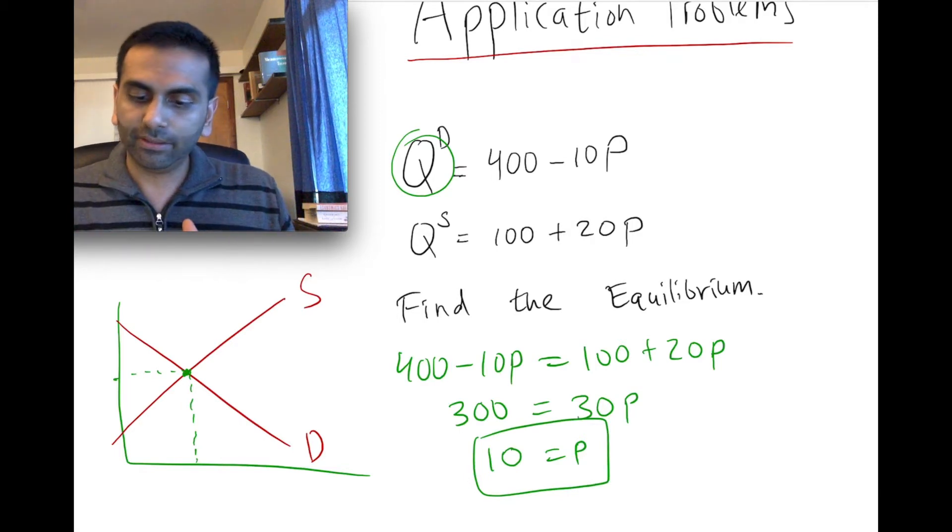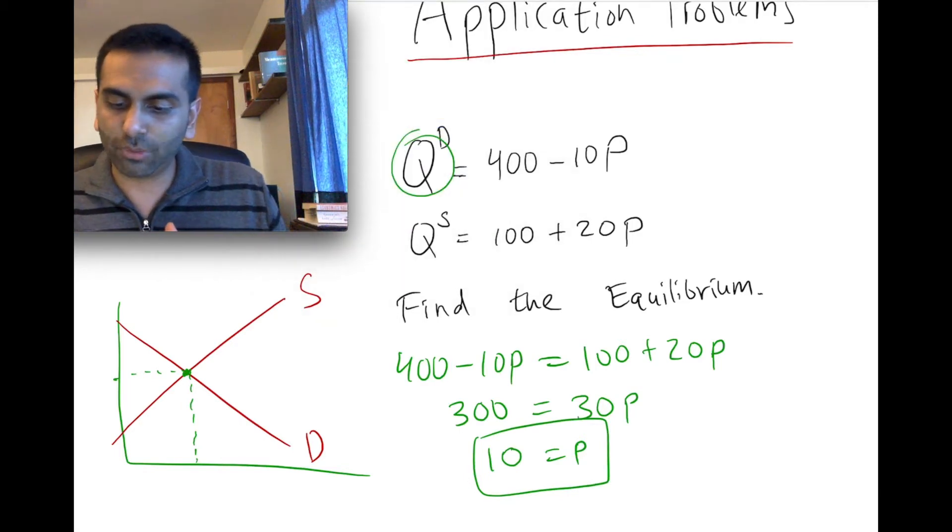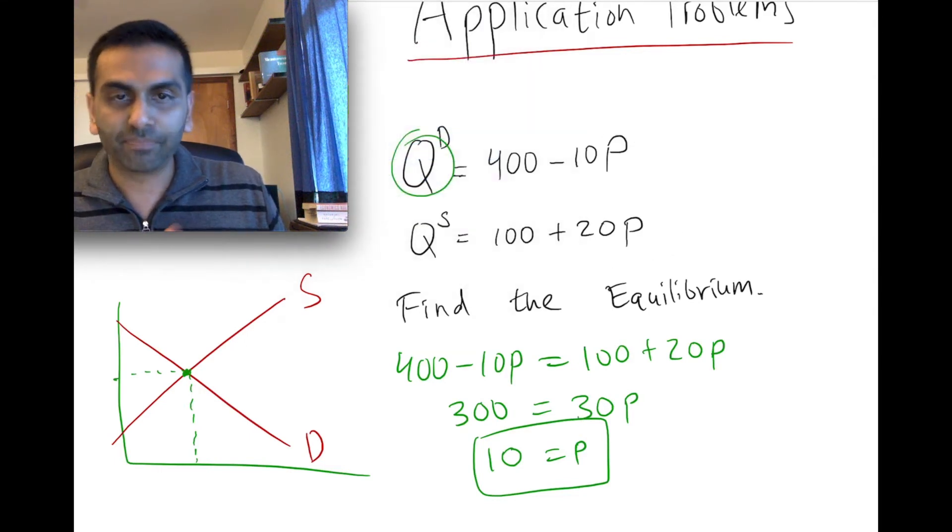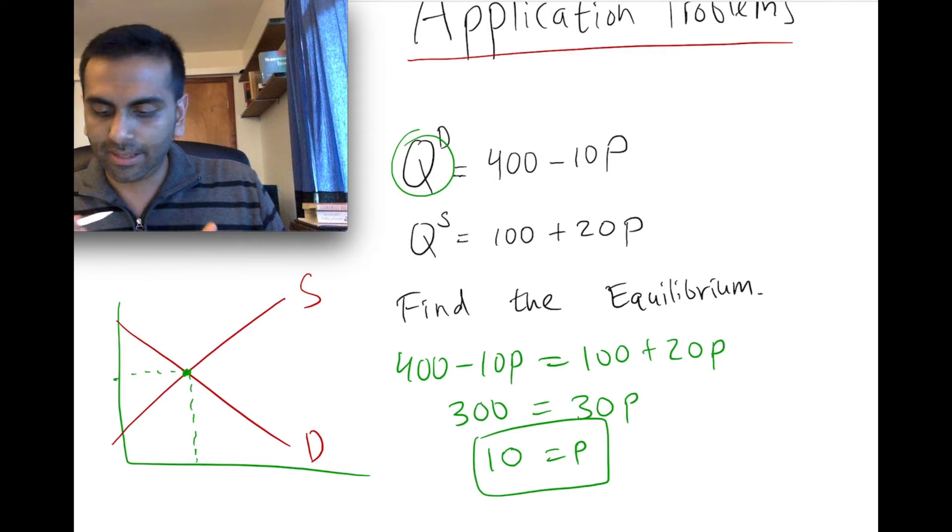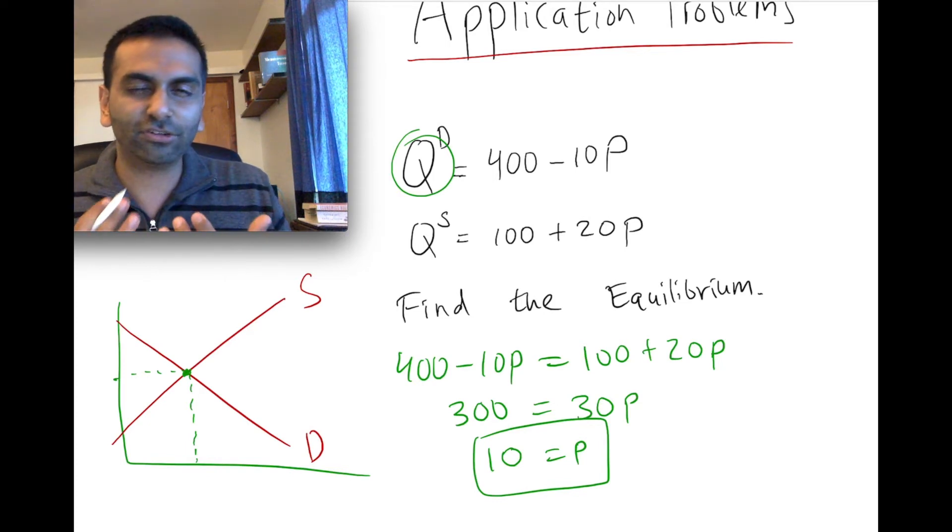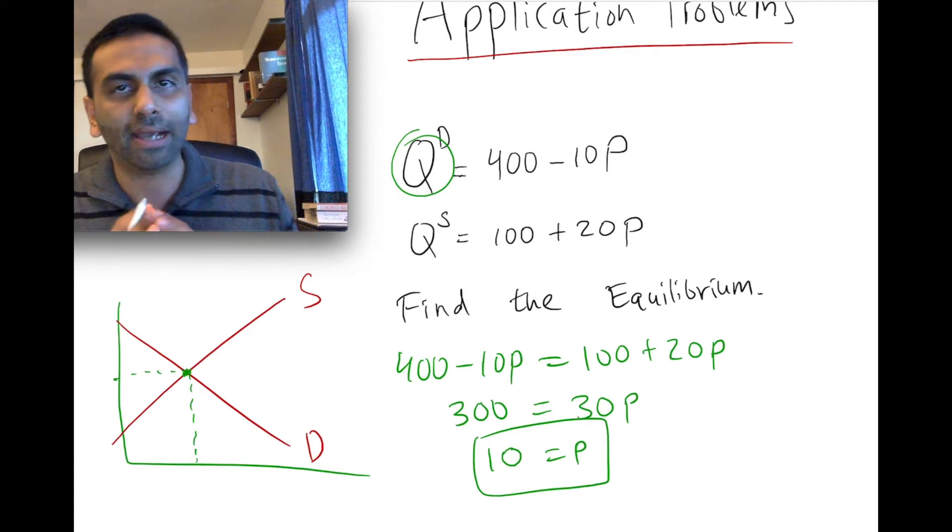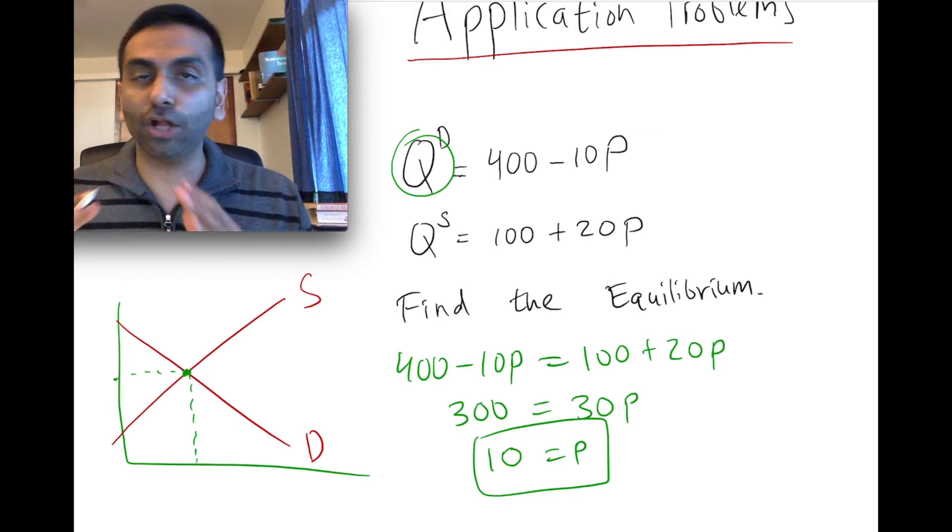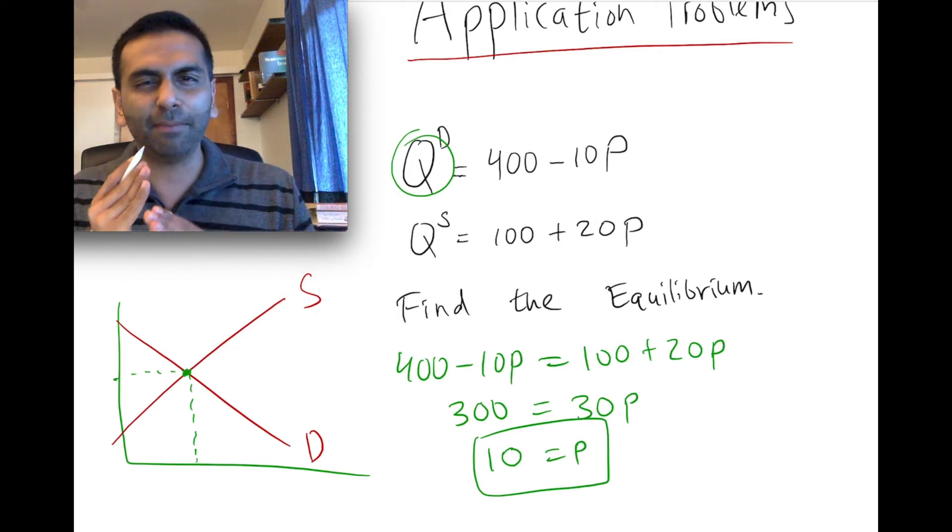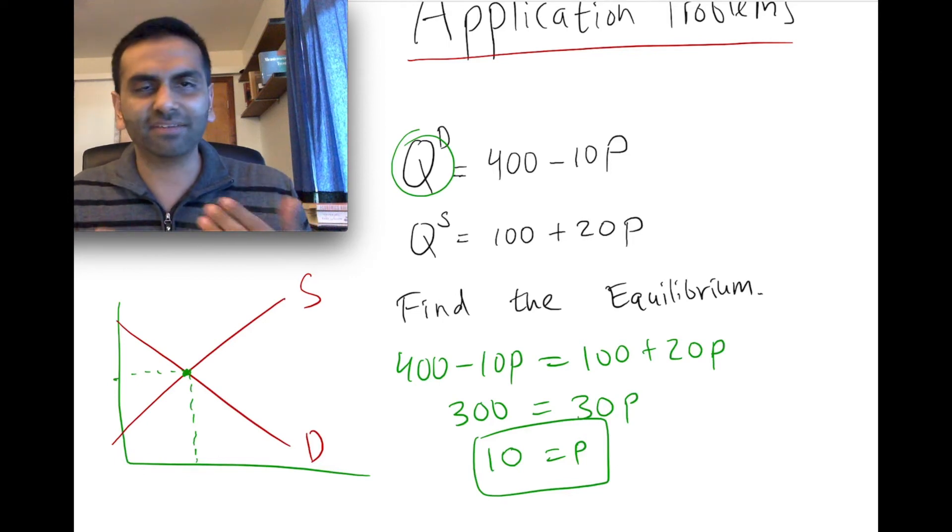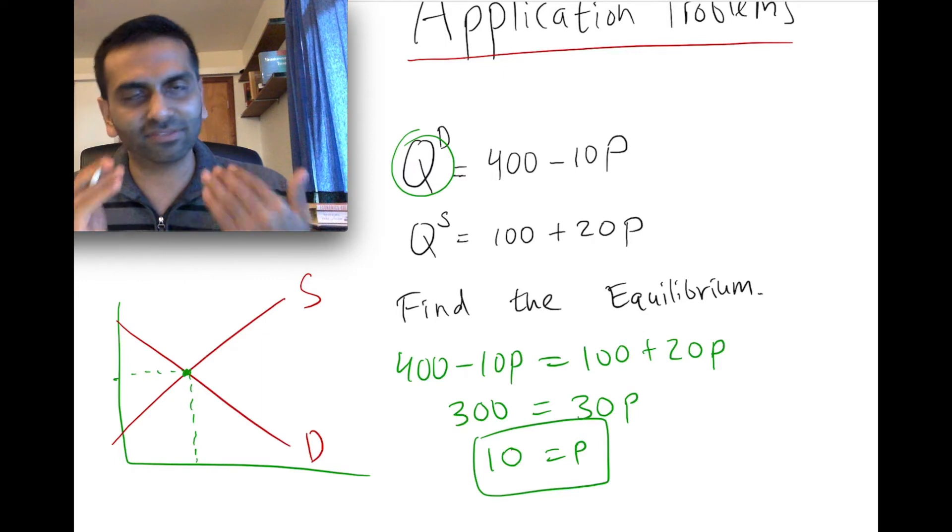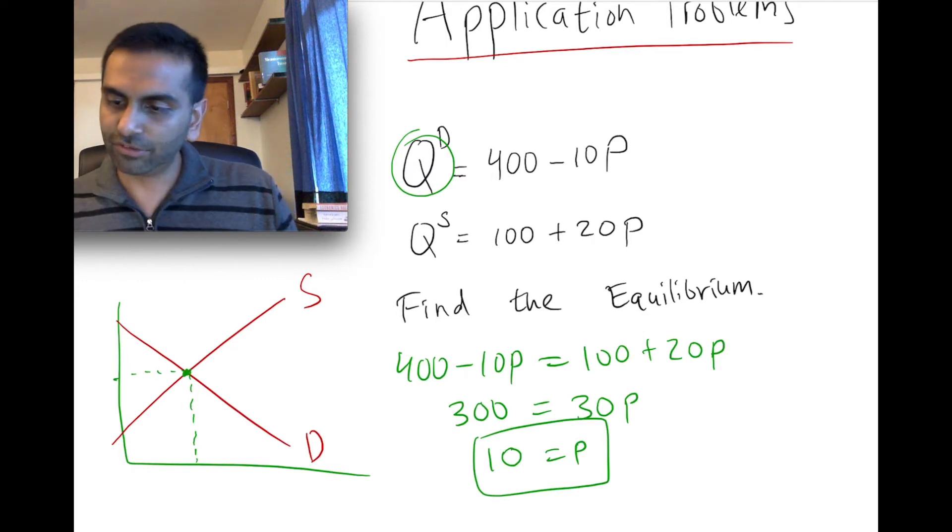Now to find the quantity, we could plug it back in. Should we plug it back into this guy or this guy? It shouldn't matter. If you were to plug it into one versus the other and you get a different answer, which one should you trust? Which is more correct? Neither, because if you get a different number, that means you've made an algebra mistake somewhere, because it can't be the intersection if both of these have a different q value at the price of 10. Then the price of 10 is not where they're intersecting. So in a way, it's a built-in way to check our answer.